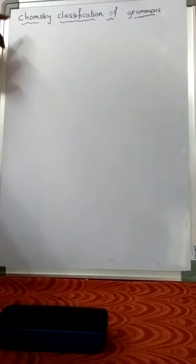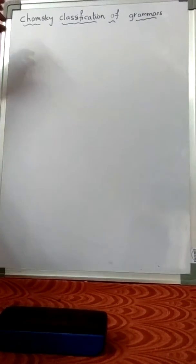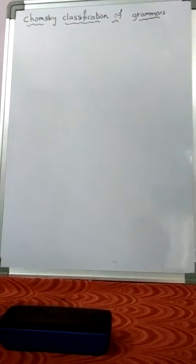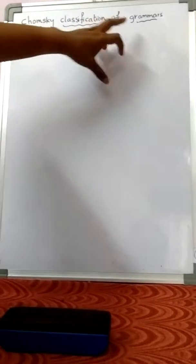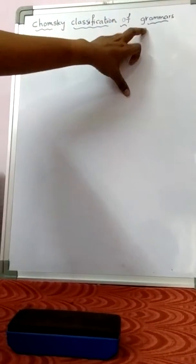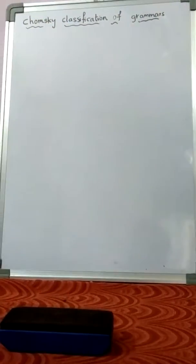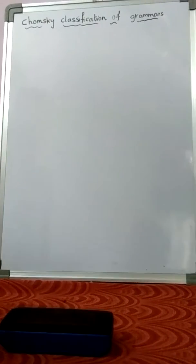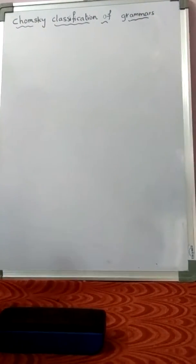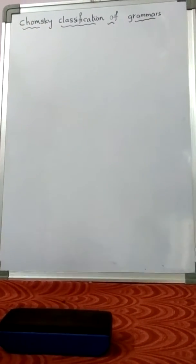What is Grammar? Grammar is used to generate a string, imposing some restrictions. Those are called Grammar. So Grammar is used to generate a string with four-tuple notation.